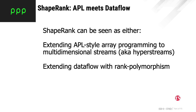Rank polymorphism basically means that functions can be written to work polymorphically and uniformly over arrays of differing rank — vectors, matrices, high-ranked arrays. And in our case, that applies to streams instead. We have these multi-dimensional streams, which we call hyperstreams.